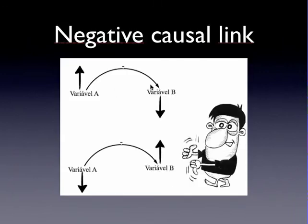Let's see now negative causal link. Negative causal links show the inversely proportional relationship between two variables. If one goes up, the other goes down. If one goes down, the other one goes up. We represent negative causal link by an arrow and the signal minus.